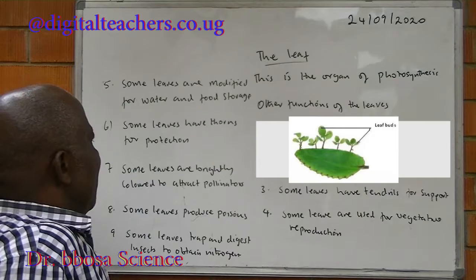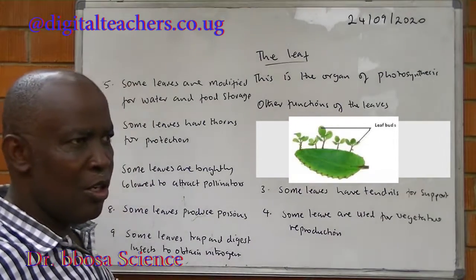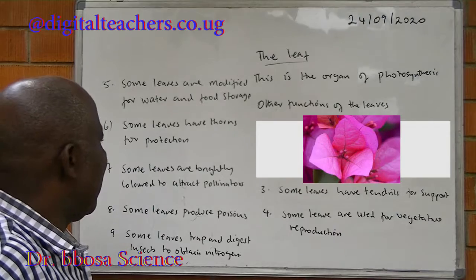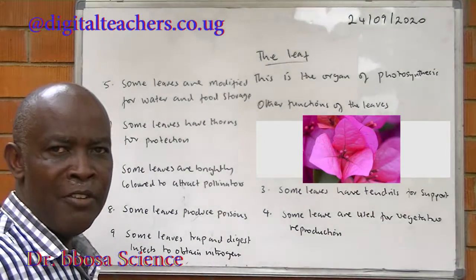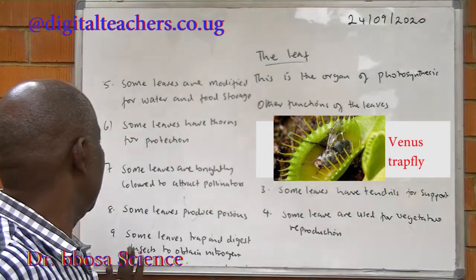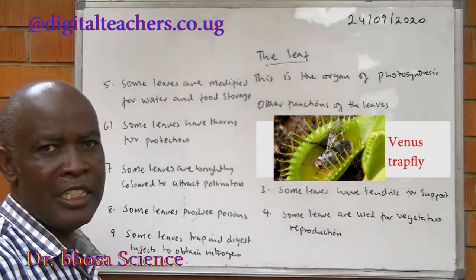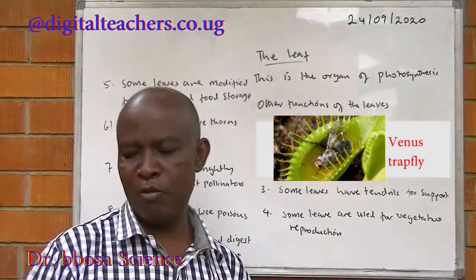Some leaves are used for vegetative reproduction, for example Bryophyllum. Some leaves are modified for water and food storage. Some leaves have thorns and stinging hairs for protection. Some leaves are brightly colored to attract pollinators, for example Bougainvillea. Some leaves produce poisons, for example tobacco. Some leaves trap and digest insects to obtain nitrogen, for example the Venus flytrap.